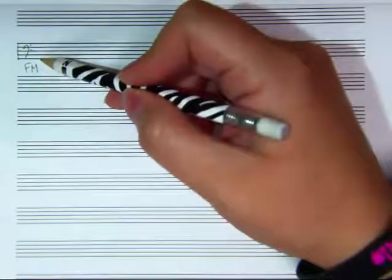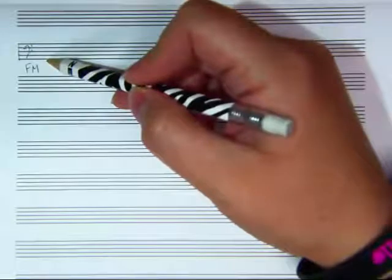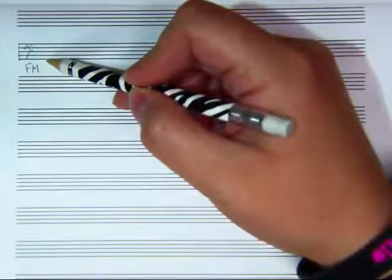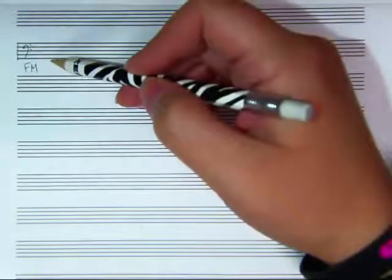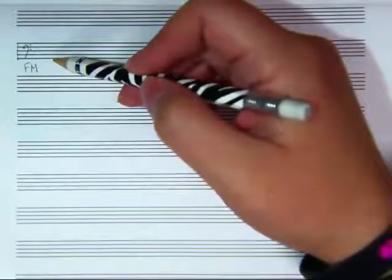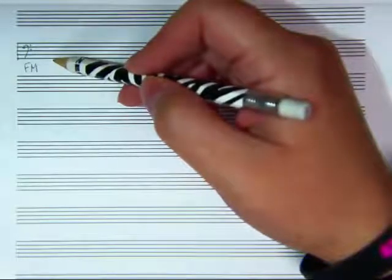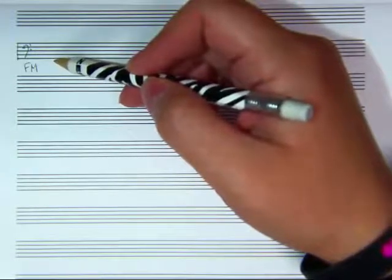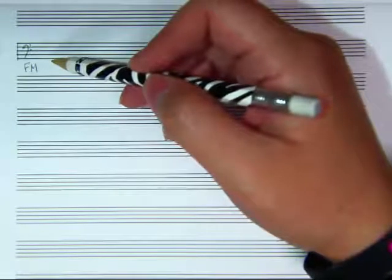So I'm actually going to start on this lower F here on the space beneath the last line. Let's say that that's an F. So I'm going to start there. That way I don't have to use ledger lines and it will make it a little bit easier to write out.